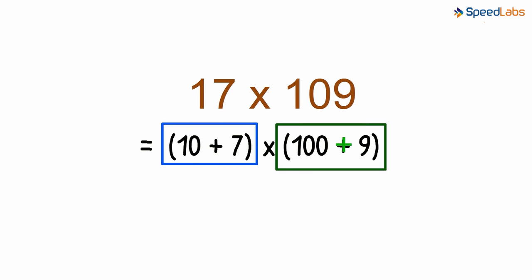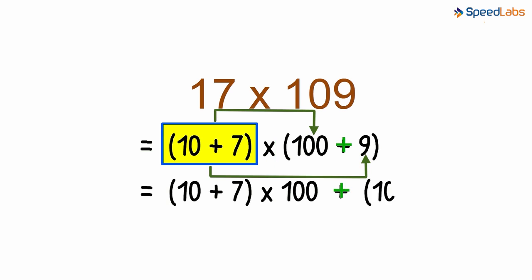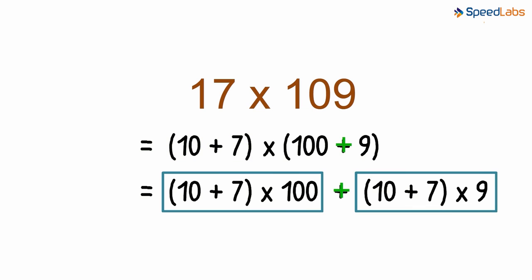How will we expand these brackets now? In our previous example, we had seen that this is considered to be a single term. Therefore, we will multiply the term 10 plus 7 with both the numbers inside the brackets. Now we can solve both these single brackets by expanding the brackets. Give it a try.